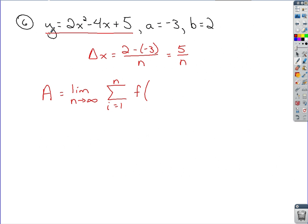So we start with a, a is negative 3. We add on i delta x. So delta x is 5 over n, it'd be 5 over n i. And then to complete the limit for the Riemann sum, we tack on delta x. Again, it's 5 over n.